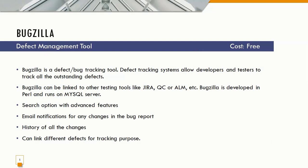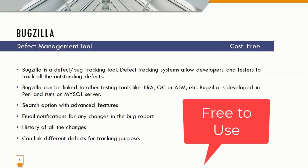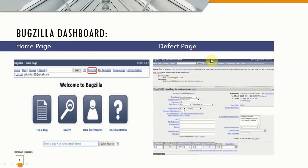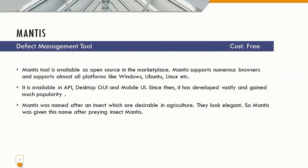Bugzilla can be linked to other testing tools like JIRA, QC, or ALM. It is developed by Mozilla and runs on a MySQL server. It offers search options with advanced features, email notification, history of all changes, and the ability to link different defects for tracking purposes. Being open source, there is no cost included. This is the home page of Bugzilla, where you can log defects and view all related aspects.